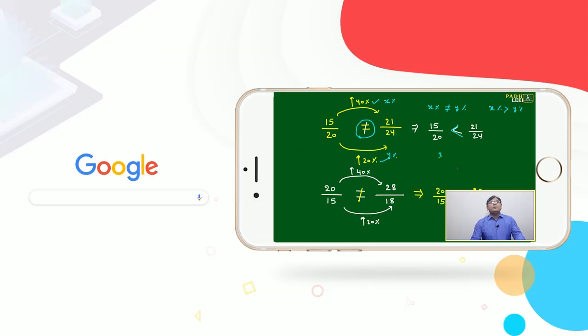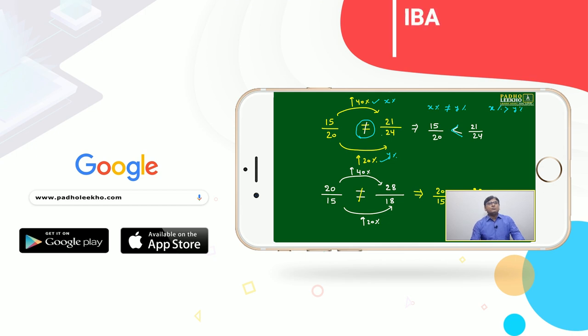But same thing we can tell: percentage change of numerator is more than percentage change of denominator, then resultant ratio will be more than base ratio. Means 15 by 20 will be less than 21 by 24.